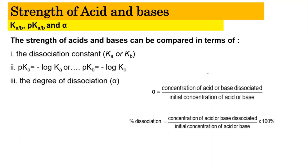So the strength of acids and bases. The strength of acids and bases can be compared in terms of the dissociation constant, whether it's Ka or Kb, and it can also be compared based on the pKa values or the pKb values. And lastly we can also compare that by using the degree of dissociation.